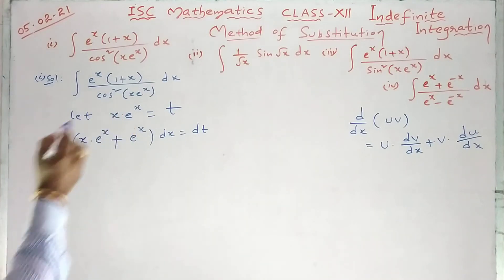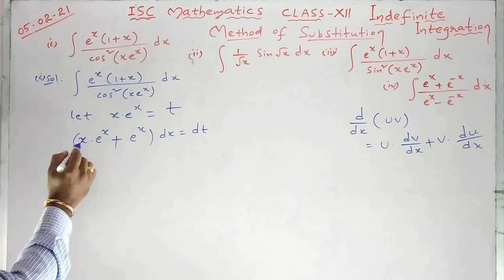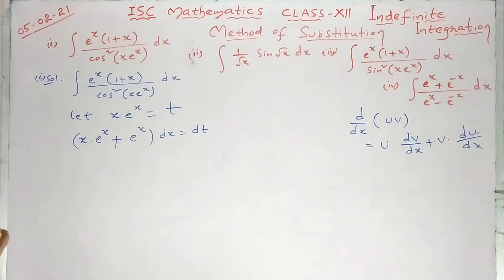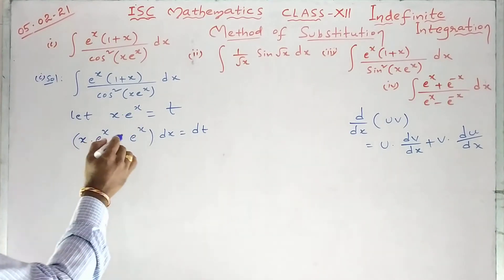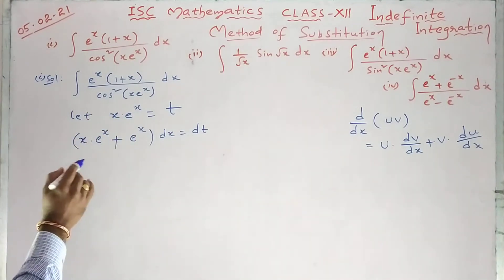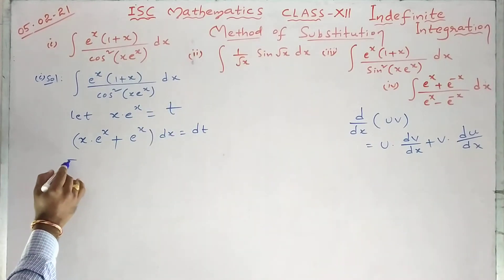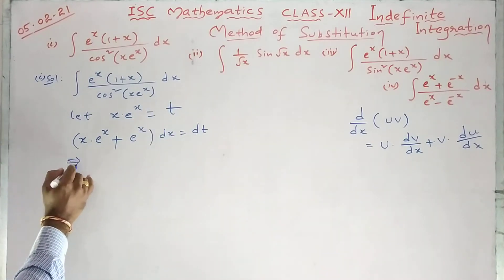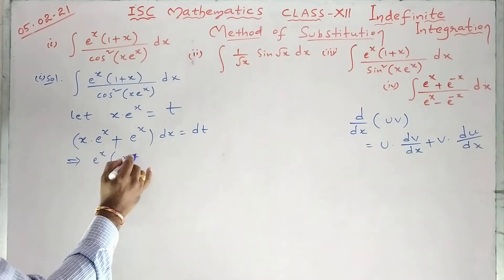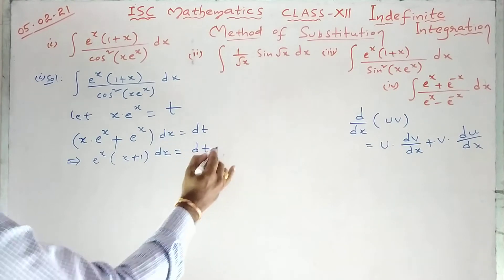First function into derivative of second function — first function is x here, derivative of e^x is e^x only. Plus, second function is e^x, and derivative of x is 1. So we get dx equal to dt. Now we can take e^x common, giving e^x into (x plus 1) dx equal to dt.